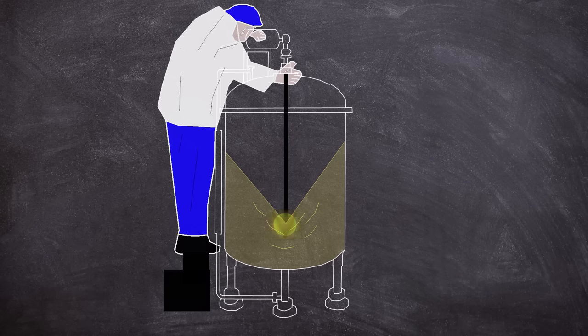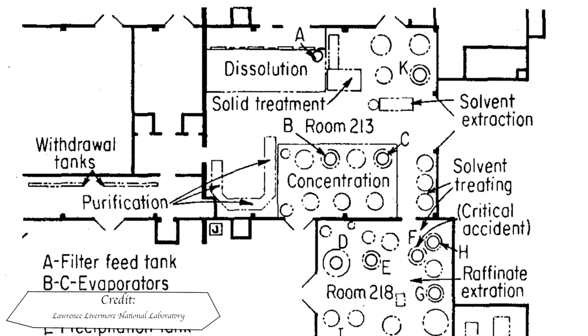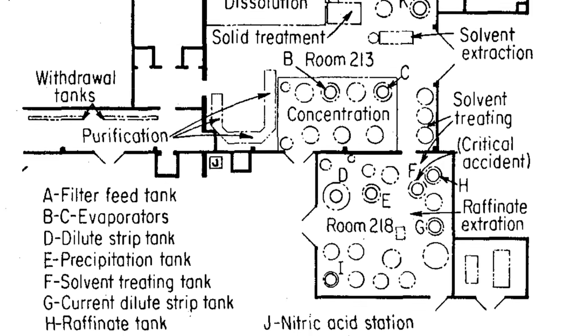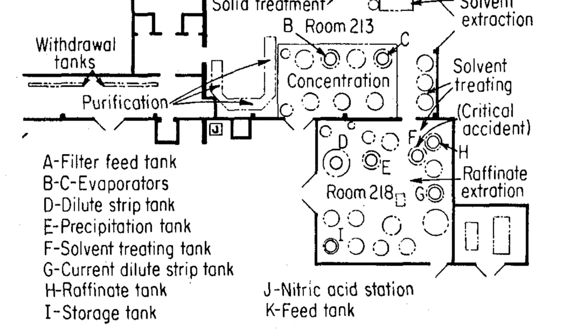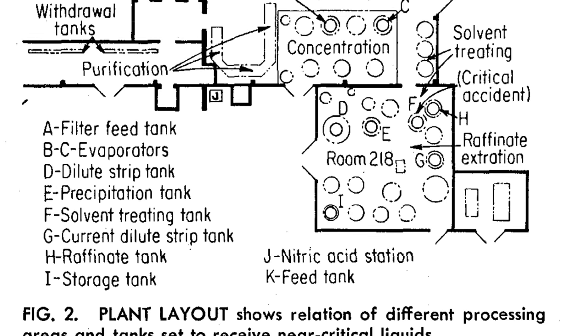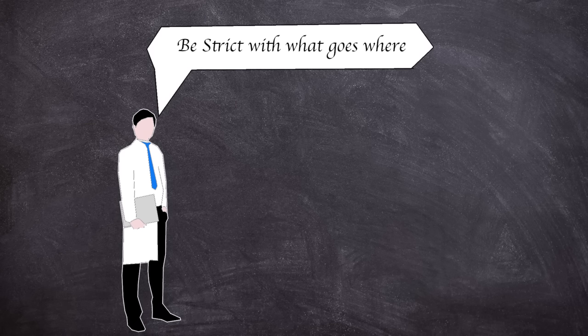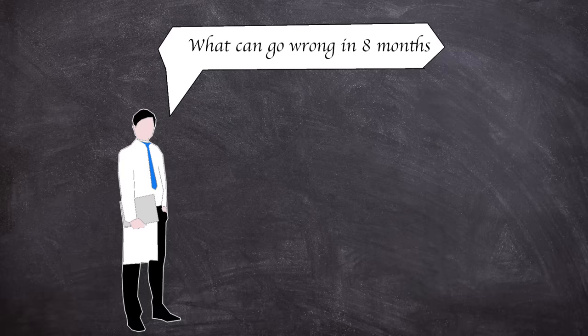Similar to the Y-12 complex, Los Alamos had employed strict administrative controls to prevent criticality of the solutions processed on site, but was planning on getting rid of the larger tanks for more safe geometry containers. Administrative controls had been used on the site for 7 years successfully and were considered acceptable for the additional 6 to 8 months that it would be required to obtain and install the improved equipment.